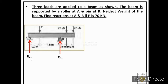At B we have to label two constraints: one normal to the surface and one along the surface. We have labeled these as reaction at B in the Y direction and reaction at B in the X direction. At the start we don't know the directions of these reactions — we have assumed RAY and RBY are acting upward and RBX is acting towards the left.